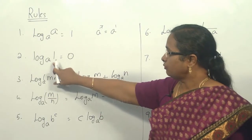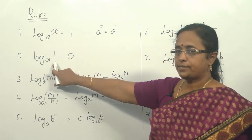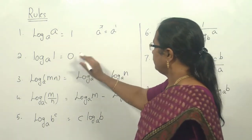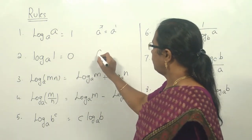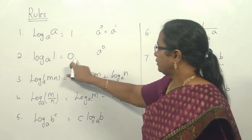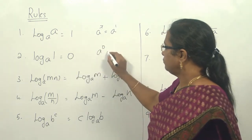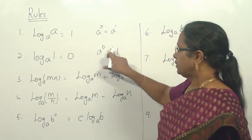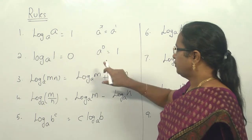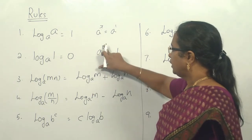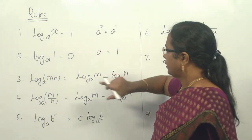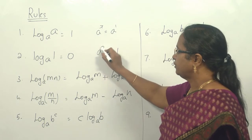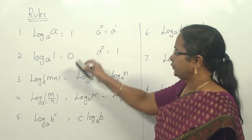Rule 2: log of 1 to the base a equals 0. Here, a to the power 0 equals 1. So if we need the power that gives 1, it has to be 0. That is why log of 1 to any base a is 0.